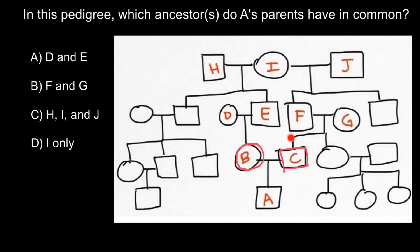J would be related to all people on the right side. Individual H would be genetically related to all the people on the left side but wouldn't be related to the people on the right side.